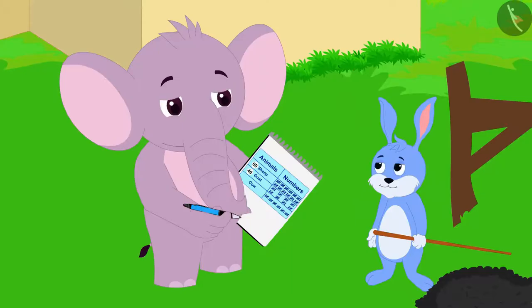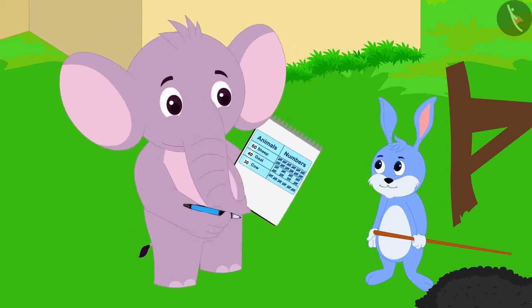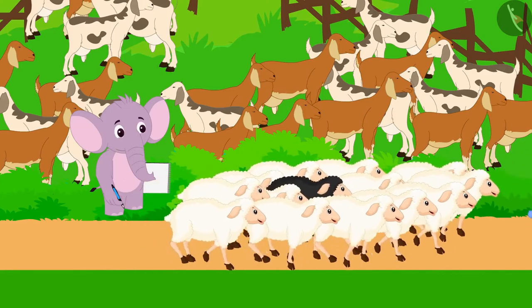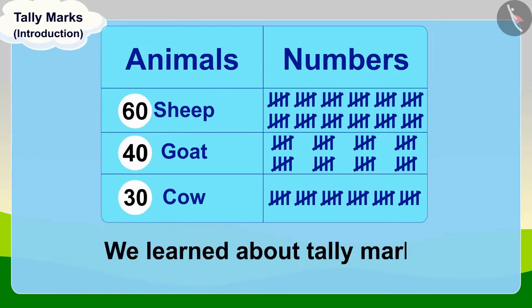Appu found out the total number of cows and thanked Bunny for telling him about tally marks. He gave Bunny his sheep to graze. In this lesson we learned about tally marks. In the next video, we will learn more about it through some interesting examples. We'll see you next time. Bye.